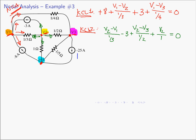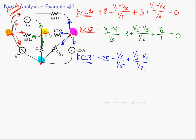KCL at node 3, currents leaving: agreeing with the arrow gives plus (minus 25). The current going to the reference through the one-fifth-ohm resistor is V3 over one-fifth. The current heading toward node 2 is (V3 minus V2) over one-half. The current heading toward node 1 is (V3 minus V1) over one-fourth. KCL says that equals zero. We now have three equations and three unknowns.